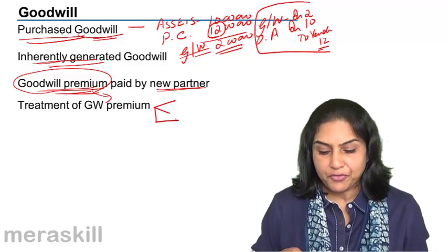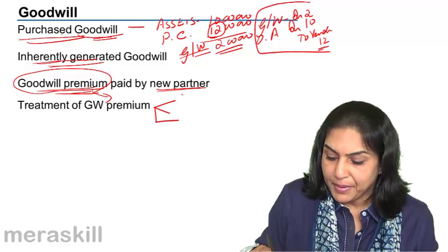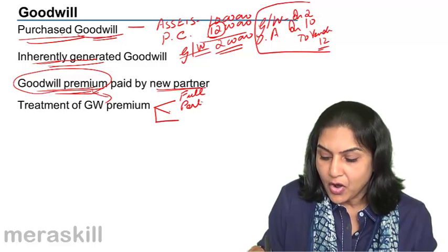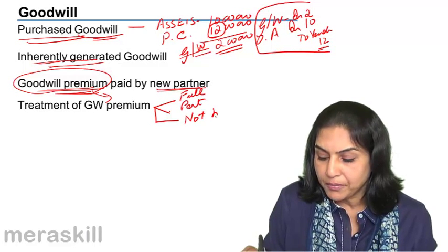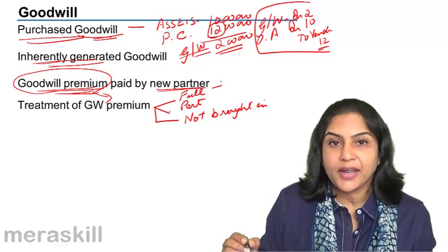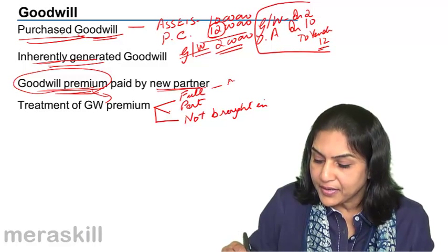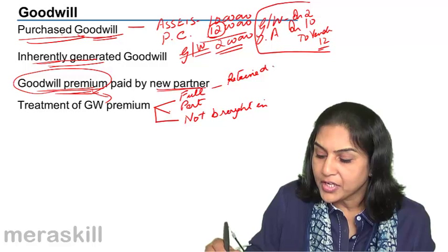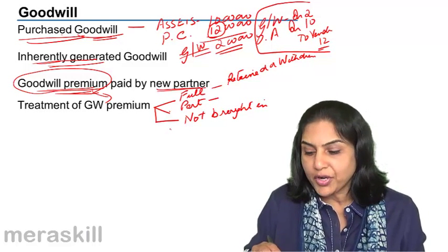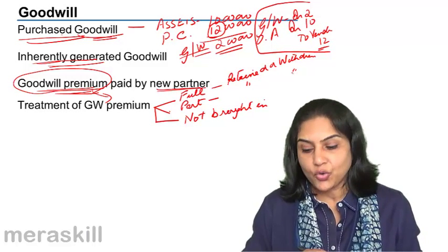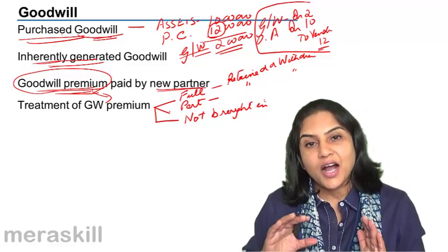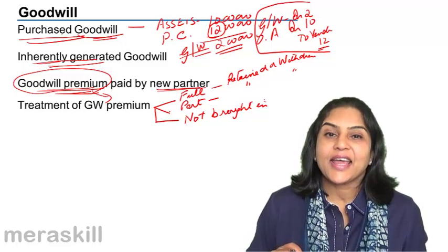When we discuss the treatment of goodwill premium, it may be brought in cash in full, it may be brought partly in cash, or it may not be brought in at all by the new partner. When it is brought in, it may be retained in the business, or it may be withdrawn by the old partners. When only part is brought in, it may be retained or withdrawn by the old partners. And if it is not brought in at all, it is not added to the resources; however, the old partners' capital accounts will be credited in their sacrificing ratio.